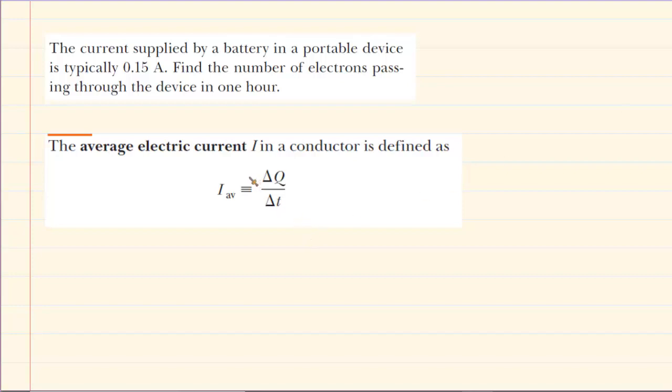We know that the average electric current, symbolized by I subscript average, is equal to the amount of charge that passes a given point divided by the time interval during which the charge passes that point.